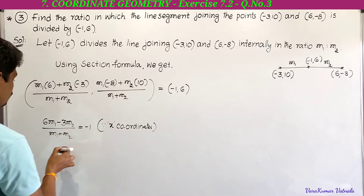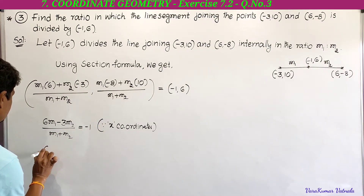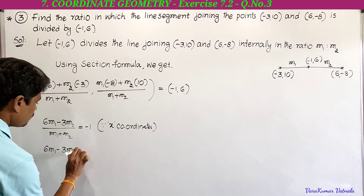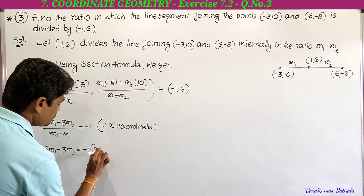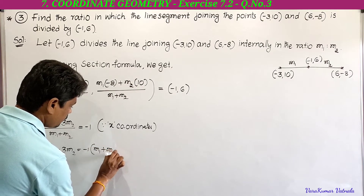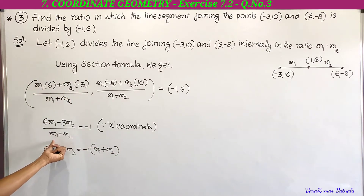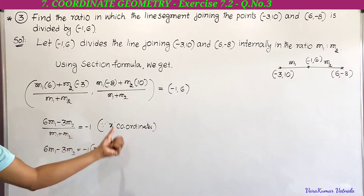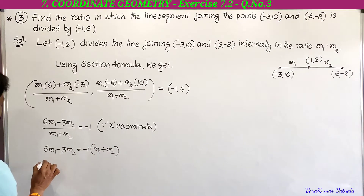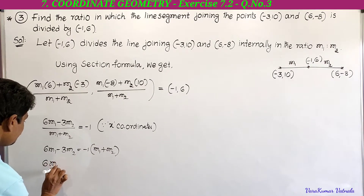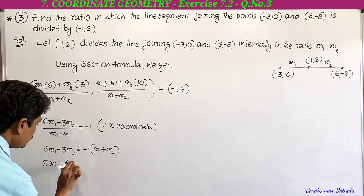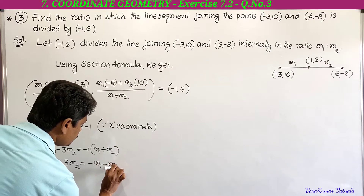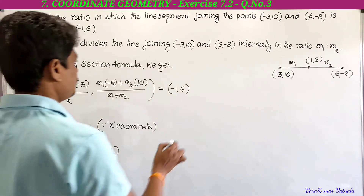Take (m1 + m2) to the right side: 6m1 - 3m2 = -1 × (m1 + m2). Since m1 + m2 is dividing, taking it to the right side it multiplies. So -1 × (m1 + m2) gives us: 6m1 - 3m2 = -m1 - m2.